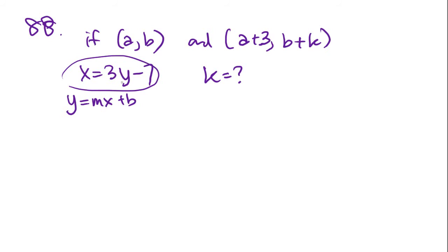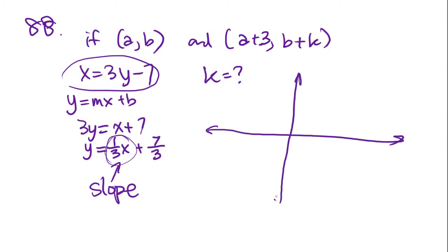So let's do that. Let's move the 7 over, add 7 to both sides, and you get 3y equals x plus 7, and then you divide both sides by 3, and you get y equals 1 third x plus 7 over 3. Now, we don't have to actually graph this out. What we're looking for here is the slope, because we're going to use the slope to figure out what k is relative to a and b. We know from the slope that it's rise over run, so the rise is by 1, and you run over to the right by 3.